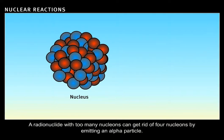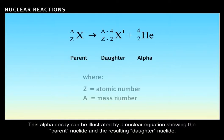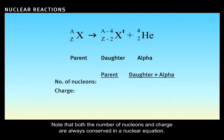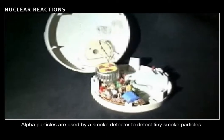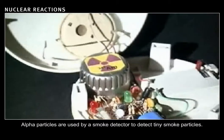A radionuclide with too many nucleons can get rid of four nucleons by emitting an alpha particle. This alpha decay can be illustrated by a nuclear equation, showing the parent nuclide and the resulting daughter nuclide. Note that both the number of nucleons and charge are always conserved in a nuclear equation. Also note that for an alpha decay, the mass number of the daughter nuclide is always four less than the parent nuclide. Alpha particles are used by a smoke detector to detect tiny smoke particles.